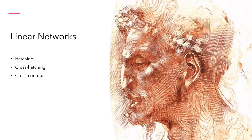Hatching is a network of parallel lines. You can see hatching used on the back of the head and the neck of this subject, and in the background just to the left of his nose. Notice how the closer the lines are together, the darker the value appears to your eye.